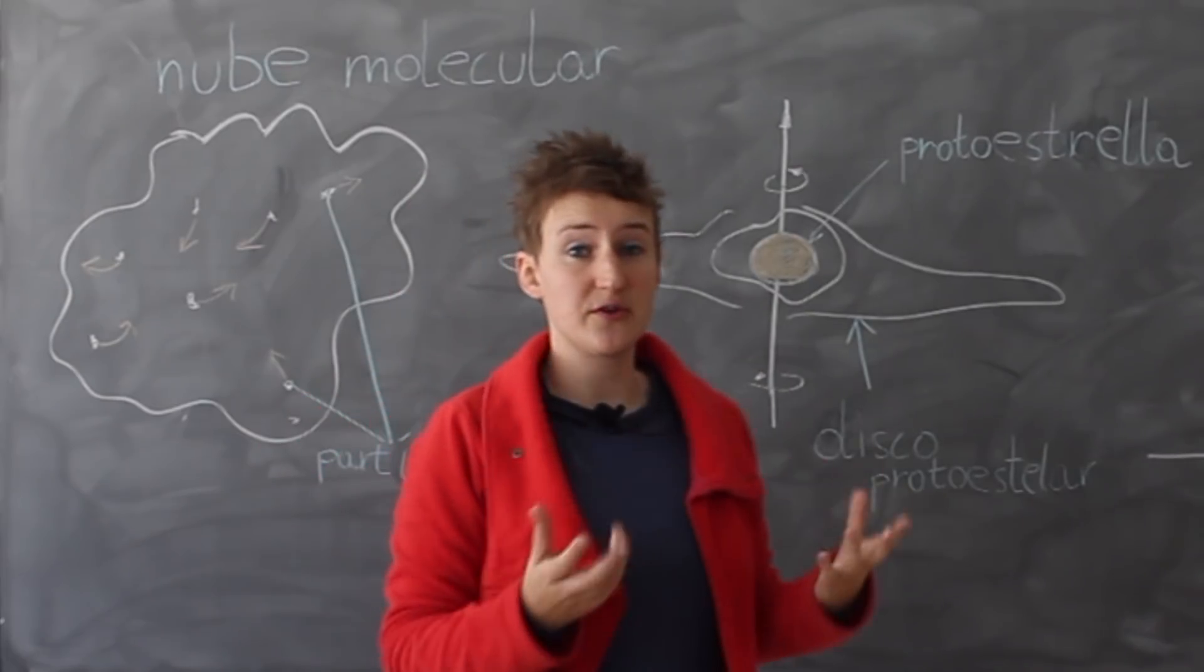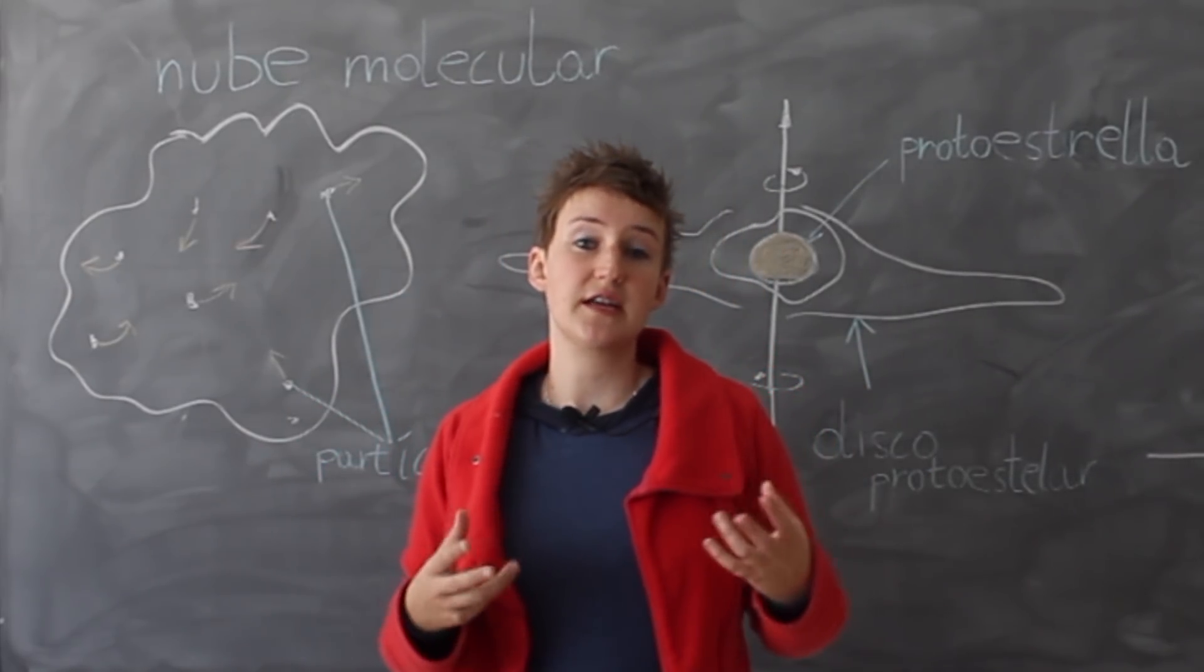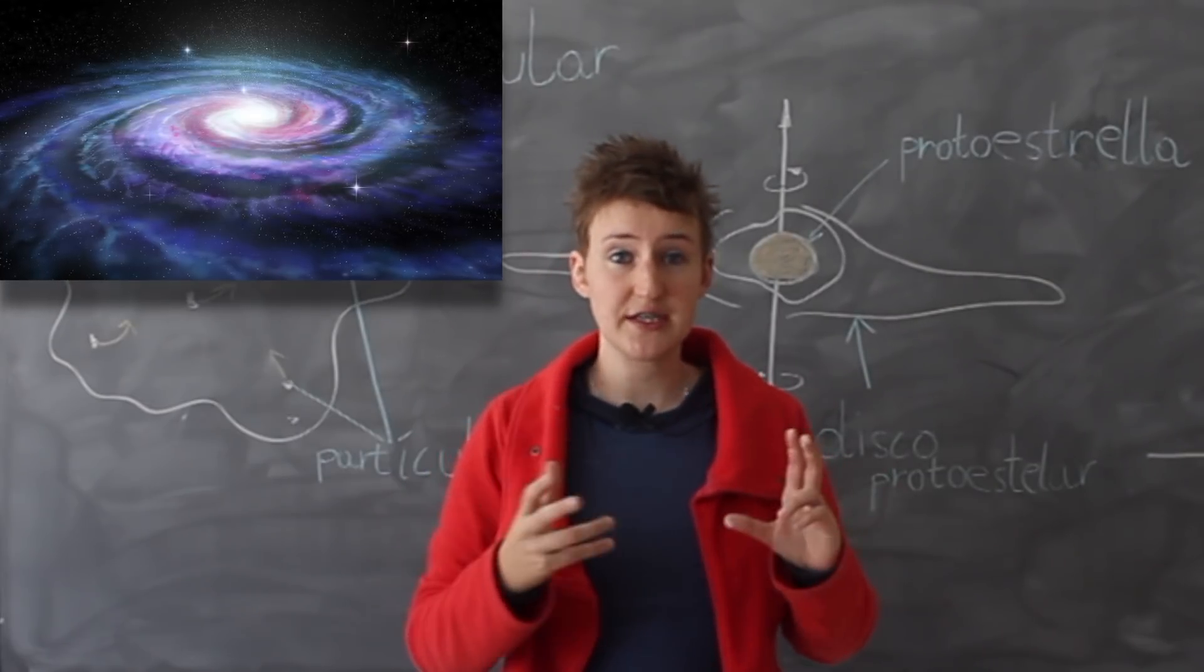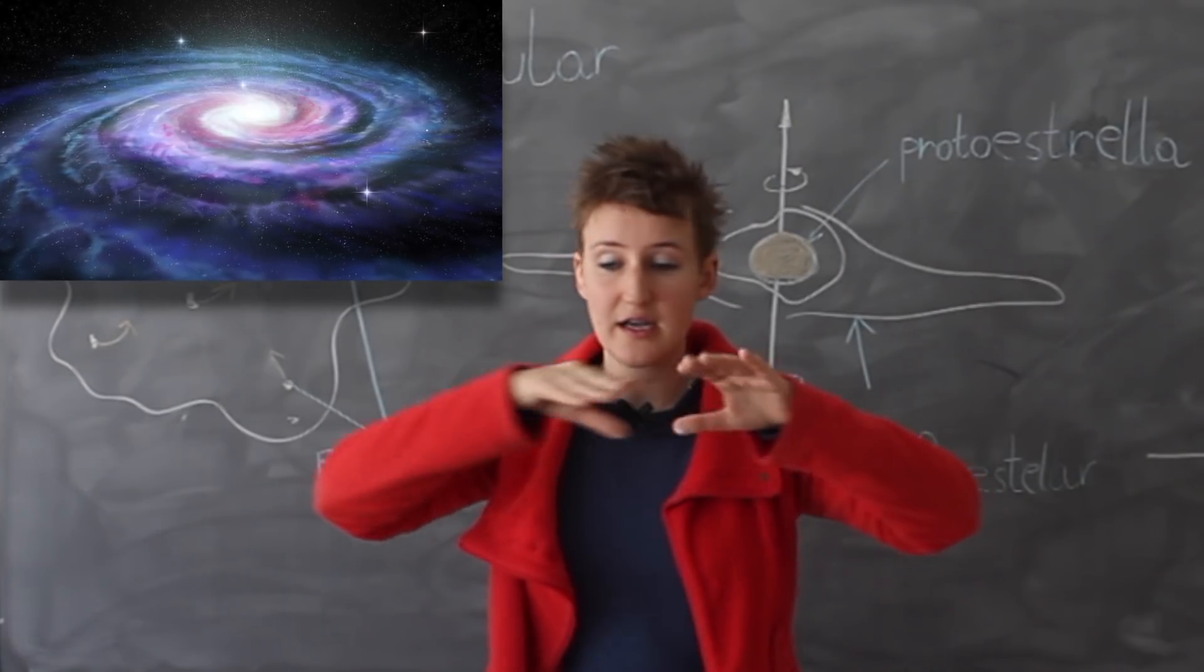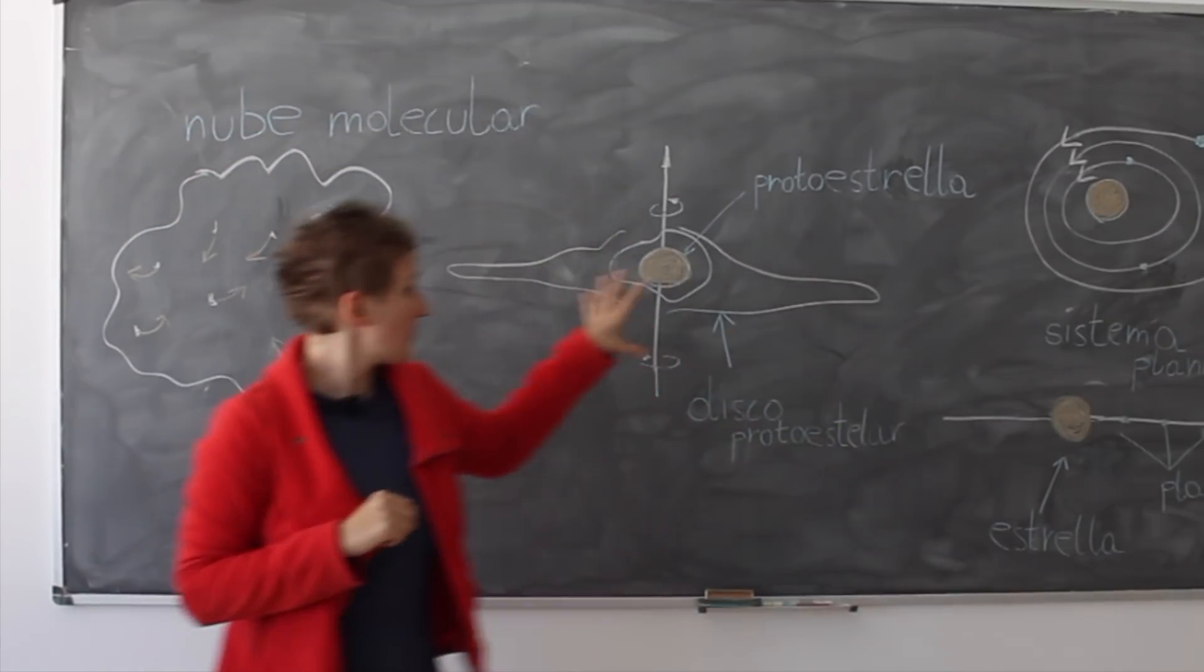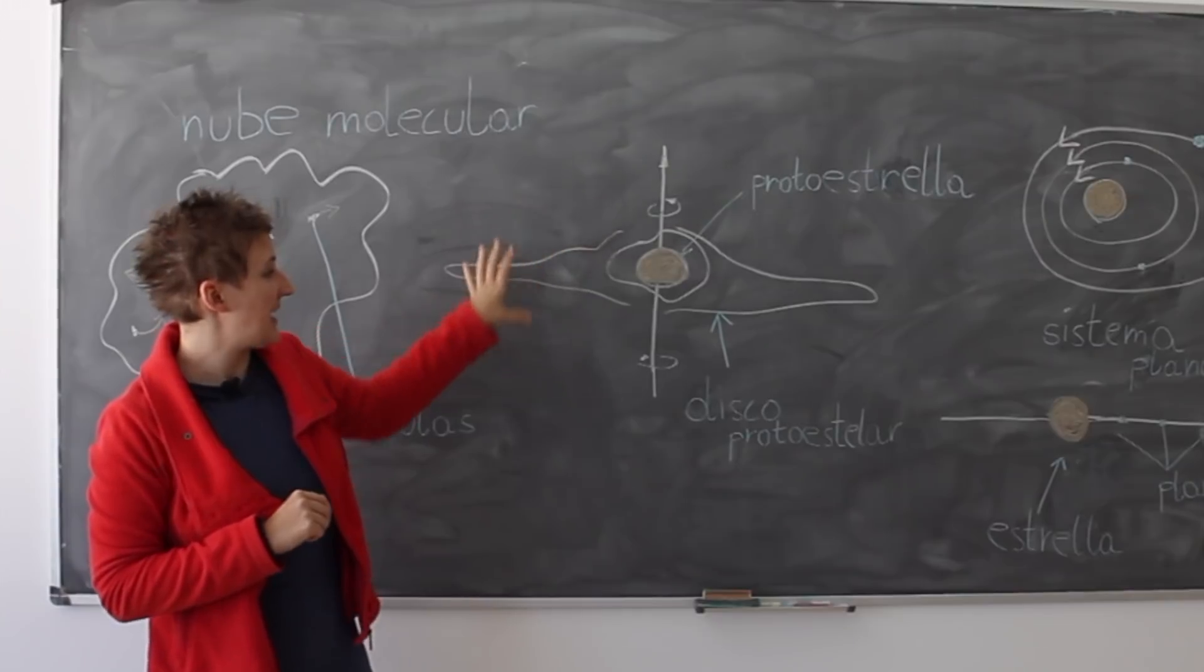And we do not only experience that with stars, we also see that, for example, with galaxies. This galaxy is rotating very fast and all the stars are located around a disk. So from this part of the formation of the planetary system...